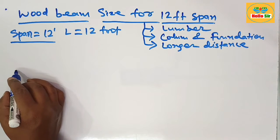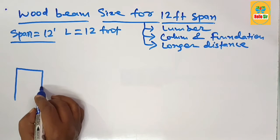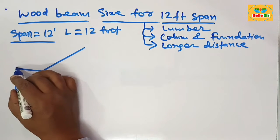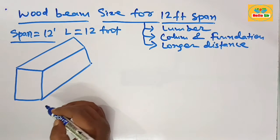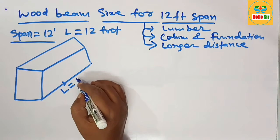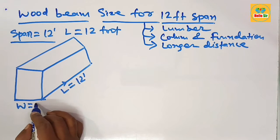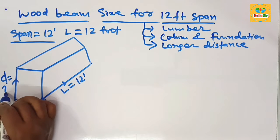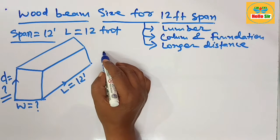First, we need to understand the different dimensions of a wood beam — specifically, what is the width section and what is the depth section of the beam. Here we make a rough diagram to understand these dimensions. The length of the wood beam is given as 12 feet. This is the width section of the beam, and this is the depth section of the beam.